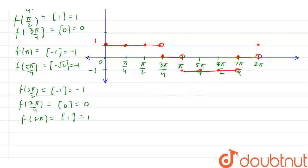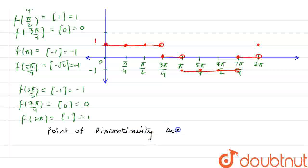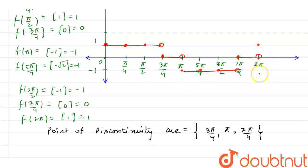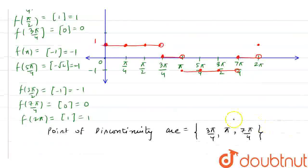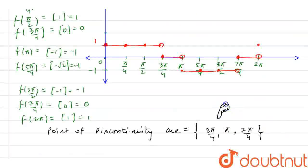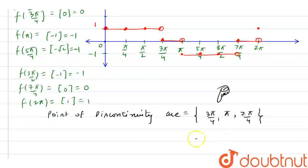Now, how many open spaces are you watching on your screen? We have to discuss the points of discontinuity. The points of discontinuity are: first, 3π/4; second, π; third, 7π/4; and fourth, 2π — but we do not consider 2π because it is an open endpoint. So we have 3 points of discontinuity in our question. This is my final answer. Thank you.